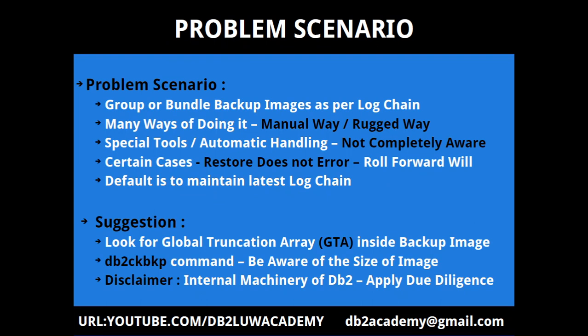The problem scenario is: I want to provide a way or method by which we can group or bundle the backup images as per blockchain. For example, if somebody gives you different types of backup images — one is a full backup image, incremental, tablespace level, tablespace level incremental, or delta — and before you start doing the restore, you want to make sure that all the backup images are of the appropriate blockchain, or that they will propagate from one blockchain to the other in a smooth manner.